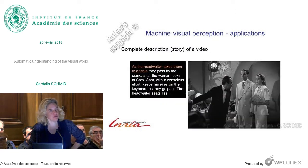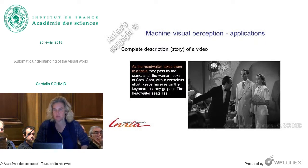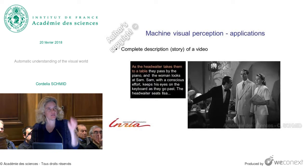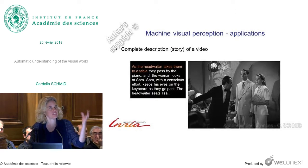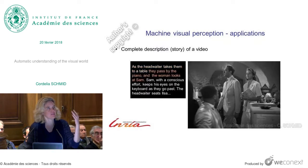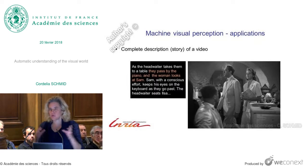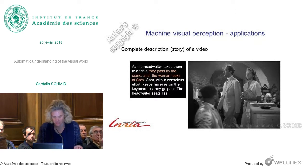Here's another example — something which we cannot do today but would want to. You have a video, and what you really want to do is auto-annotate its content. On the left is something a human has annotated, and on the right you can see the video. That's where we want to go in the long term: really understand that the head waiter takes them to the table, they pass by the piano, the woman looks at Sam, and so forth. Today we can do simple categories, but we cannot have full reasoning of what's going on in the scene.